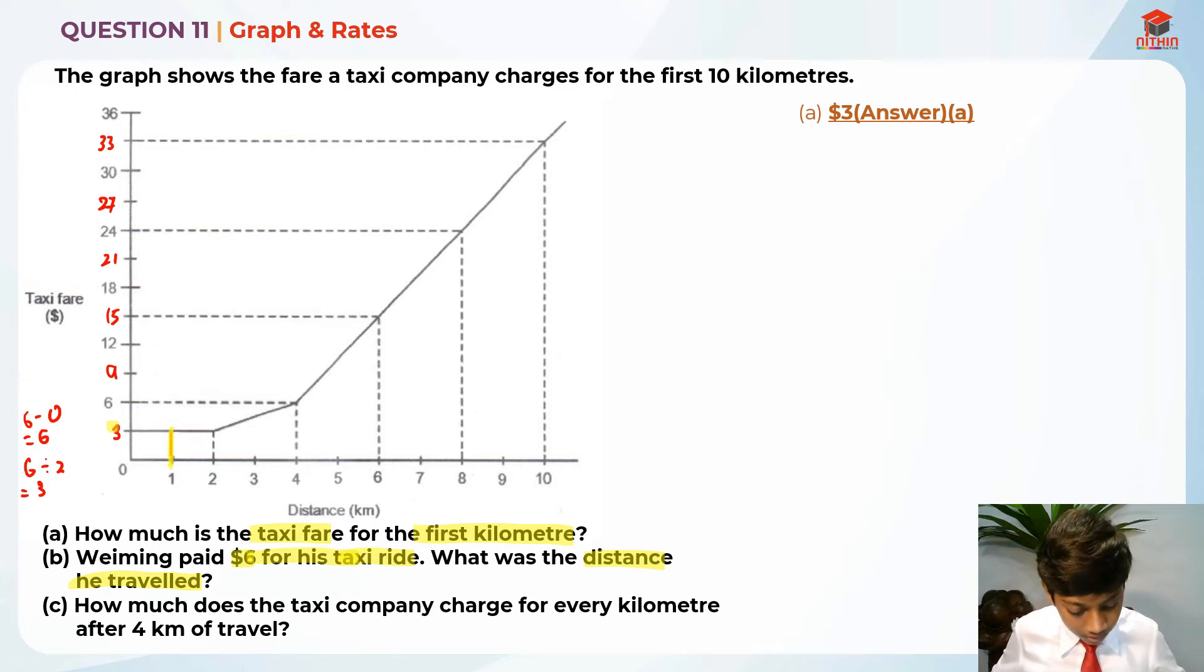For this, we are lucky because this $6 is actually already connected to a line. It gives me 4 over here—4 kilometers. So the distance he traveled is actually 4 kilometers.